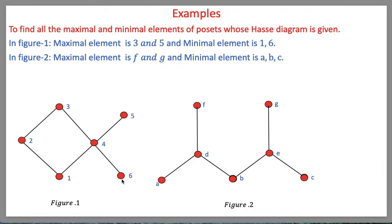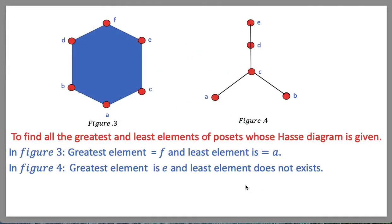An element b is minimal if there is no element c such that c is less than or equal to b. In another figure, f and g are the maximal elements, and a, b, c are the minimal elements. To find the greatest and least elements, we know that an element a belonging to A is said to be the greatest element of A if x is less than or equal to a for all x belonging to A.